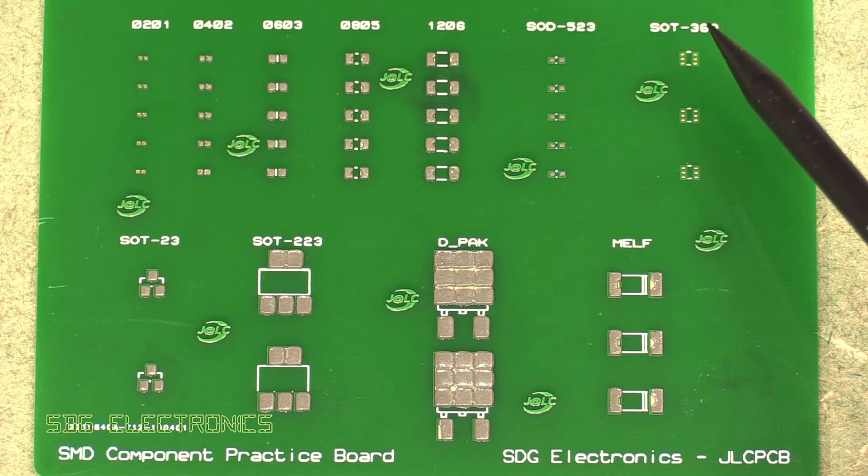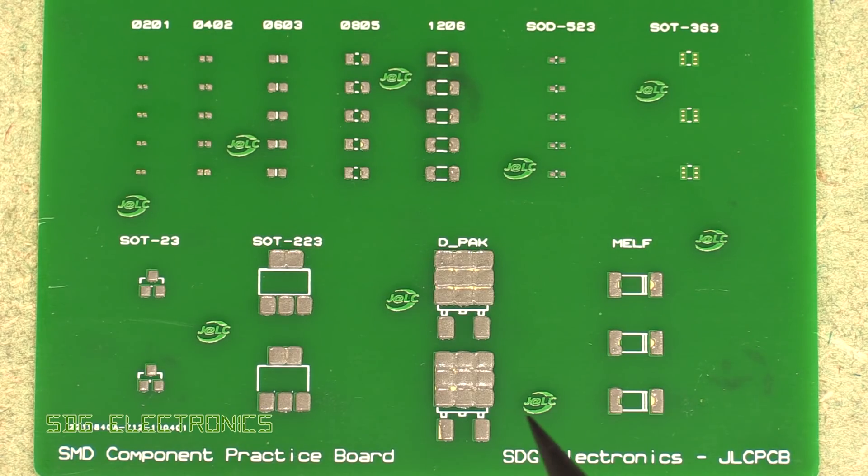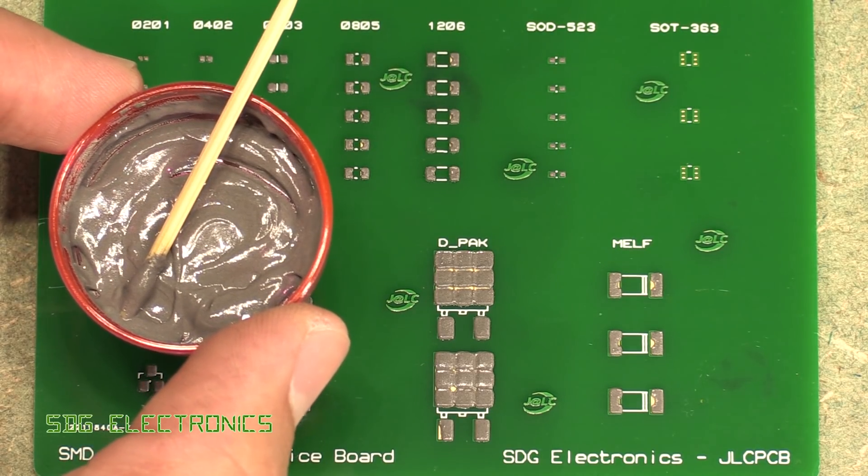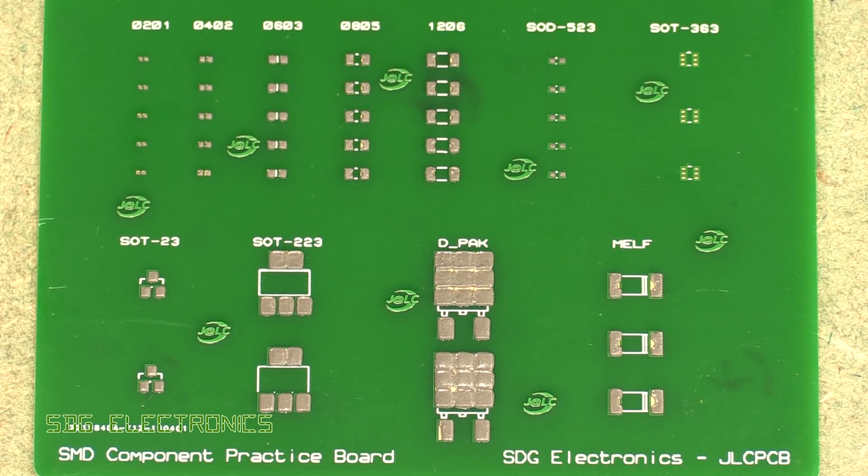I purposely didn't populate the SOD-363 parts because I forgot to order the parts to fit on here. It looks like we've got pretty much perfect coverage all over. Definitely getting it up to room temperature and, in the case of this solder paste, adding that little bit of extra flux paste to get it back to a nice fluid texture has meant that we've got good coverage on the board.